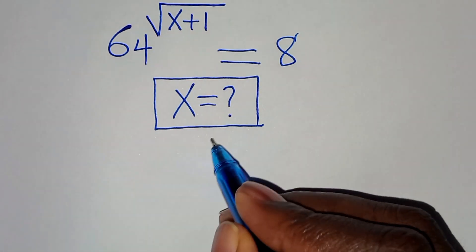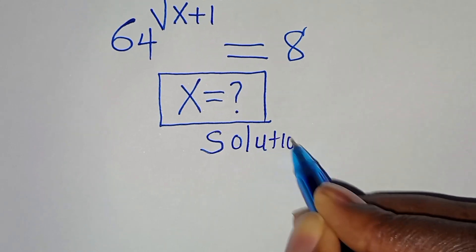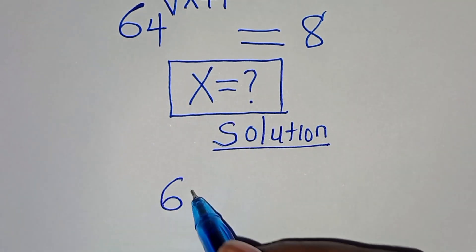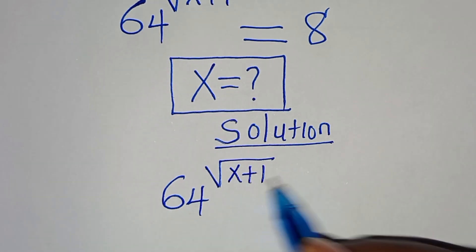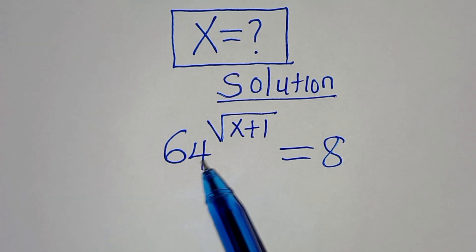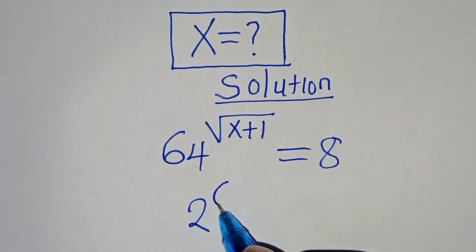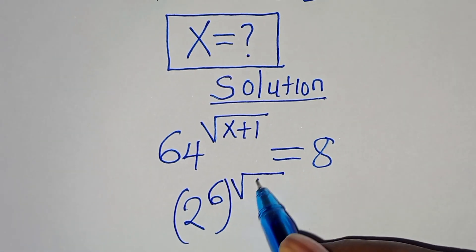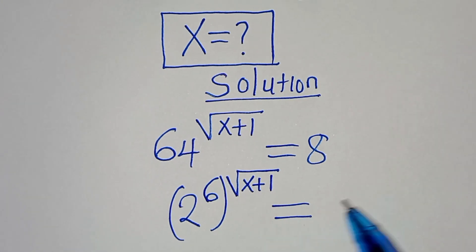Now let's provide a solution. We have 64 to the power of square root of x plus 1, this is equal to 8. The first step is to express 64 as 2 to the power of 6, then 2 to the power of 6, raised to the power of square root of x plus 1, is equal to 8.